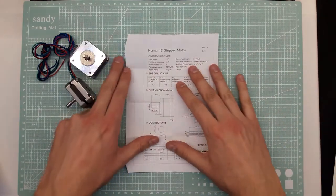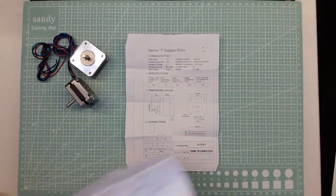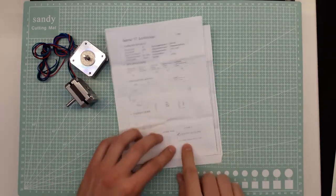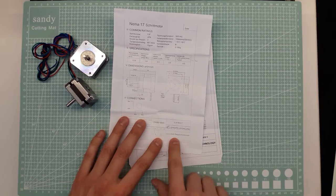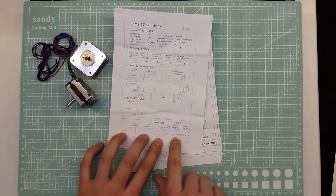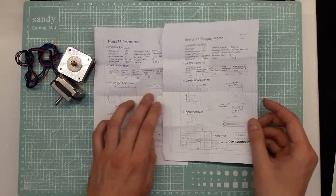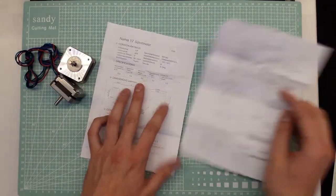They also come with a spec sheet, so this one is for each one of them. You can read up on them. Here's the link to www.omc-stepperonline.com.